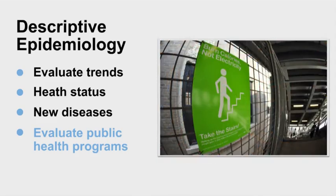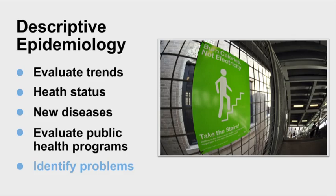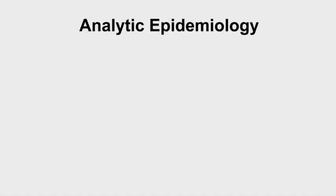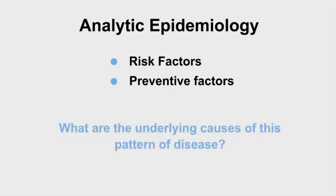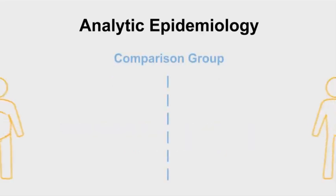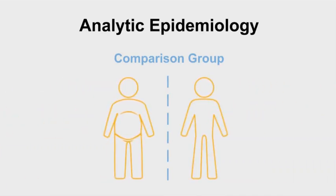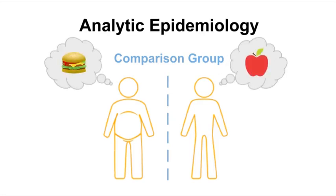Descriptive epidemiology can also be used to identify problems to be studied by analytic epidemiology, and it aims to research and study risk factors and preventive factors for diseases. When we ask what are the underlying causes of this pattern of disease or health outcome and investigate the causes, we are using analytic epidemiology. Use of a comparison group is a key feature of analytic epidemiology. It focuses on the search for causes and effects — the why and the how — for example, a study on the causes of obesity would examine dietary differences among two or more comparison groups.